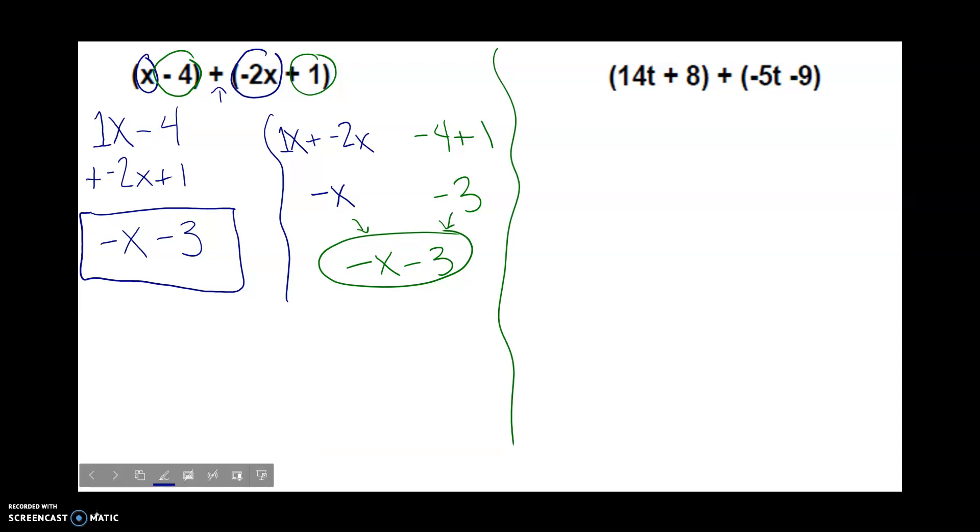Just pick which one works better for you. So in our next question, 14t plus 8 plus negative 5t minus 9. If I'm stacking, I have 14t plus 8 plus negative 5t minus 9. If I'm grouping, I have 14t plus negative 5t, and then I would group that 8 plus, I'm going to treat that like a negative 9. 14t minus, or negative 5t, or even minus 5t, because they'd be the same. 14t plus negative 5t, 14 is bigger, it's bigger by 9. So I have 9t.